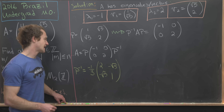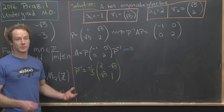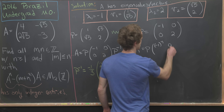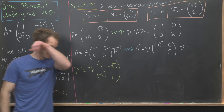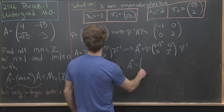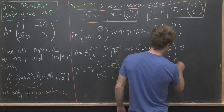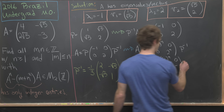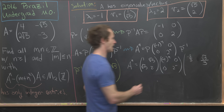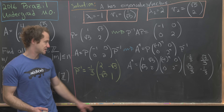The diagonalization gives us a powerful trick: Aⁿ = P·Dⁿ·P⁻¹ = P·[(-1)ⁿ, 0; 0, 2ⁿ]·P⁻¹. Writing this out explicitly: Aⁿ = [1, √5; √5, 2]·[(-1)ⁿ, 0; 0, 2ⁿ]·[−2/3, √5/3; √5/3, −1/3].